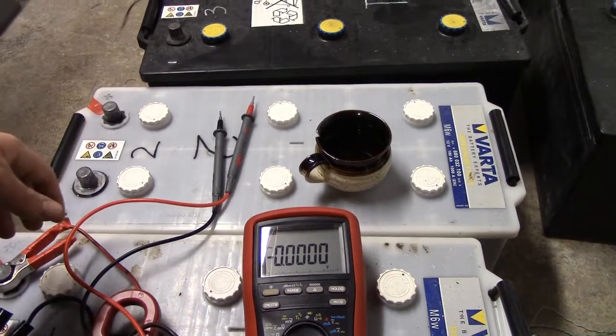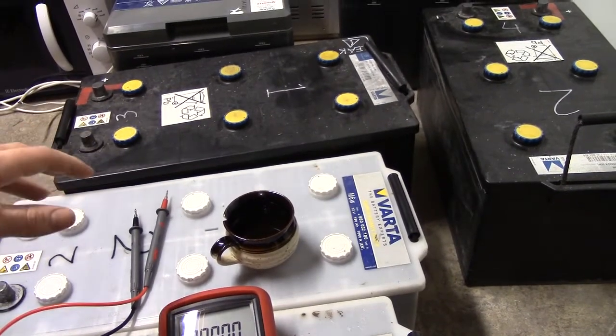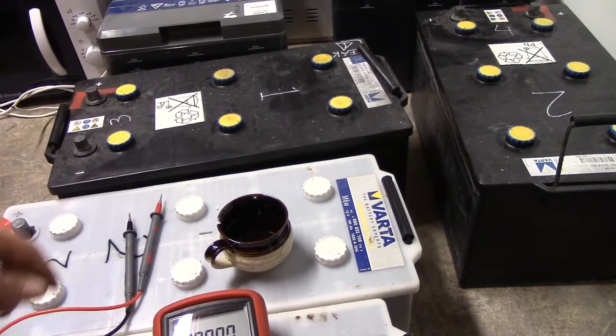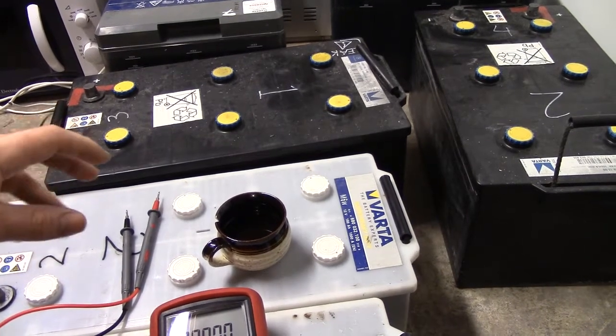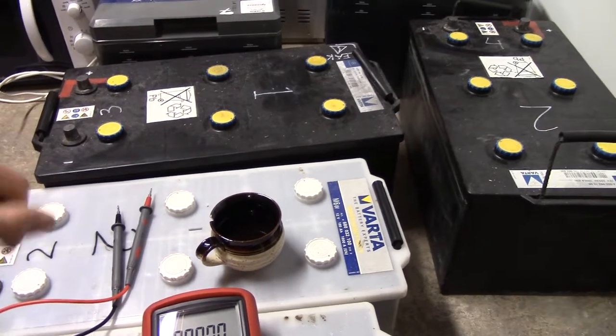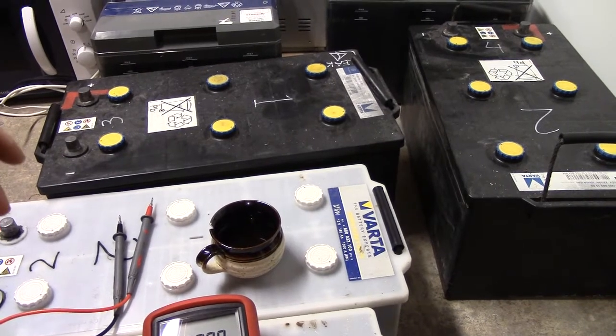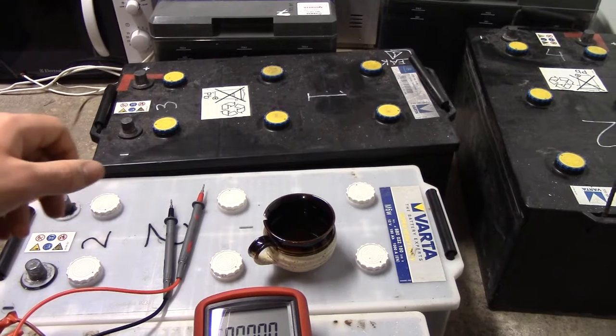I've checked the specific gravity of them and that is surprisingly extremely even. It's 1.25 for every battery. While that might sound a bit low, it is because I've put a bit more water in them than they should have, just because I don't need extremely strong acid and high voltage in these batteries.